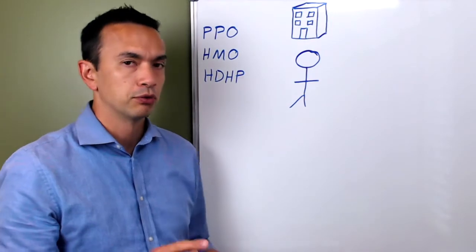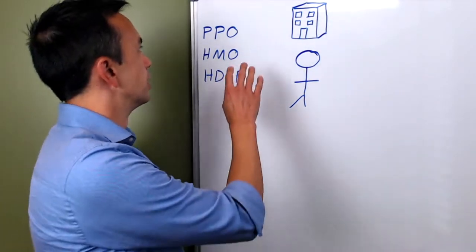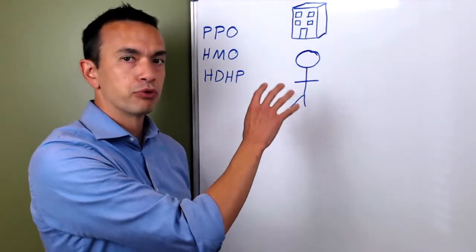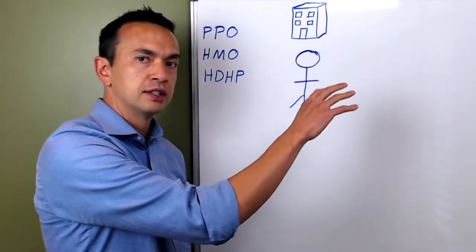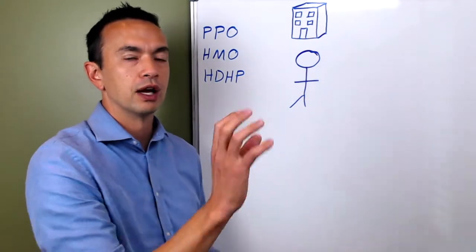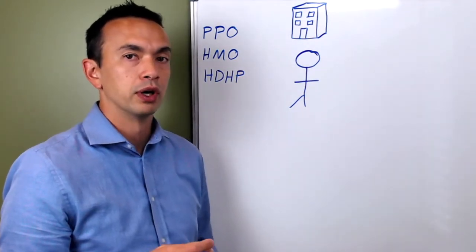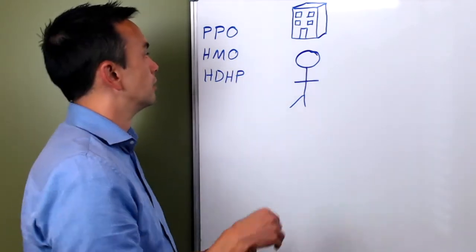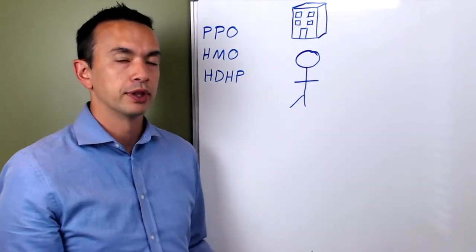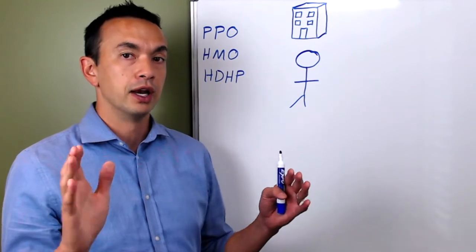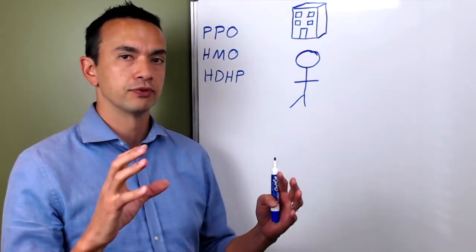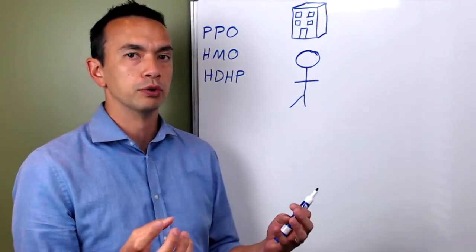Real quick, I'm not going to get too far into these details, but a PPO plan usually has the highest premium but it's the one where you have copays and you have a lot more flexibility with what provider you use. With an HMO plan, it's also another one that has copays, but it's usually a little bit cheaper. However, the network matters as far as who you go to for your health coverage.